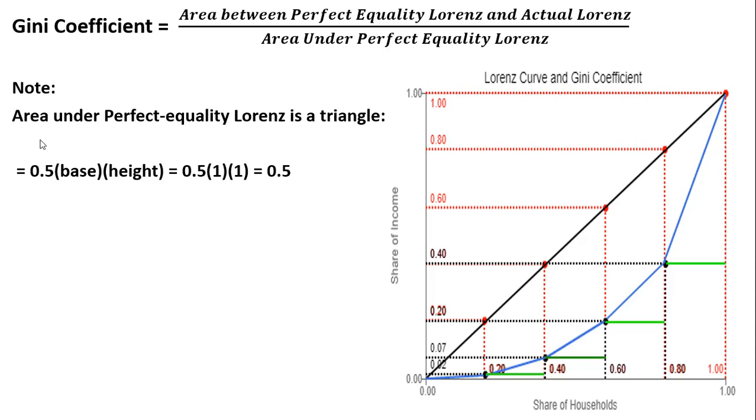Note, the area under the perfect equality Lorenz curve is a triangle. The perfect equality Lorenz curve here would be this black line, where each income quintile is getting 20% of the income. And this area under this black line is just a triangle, one half base times height.